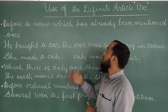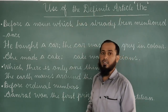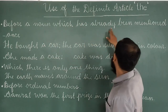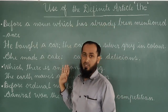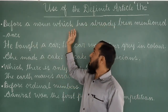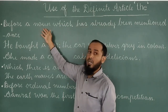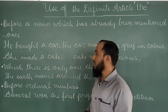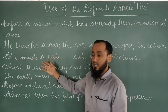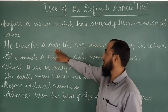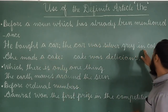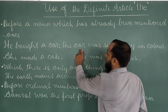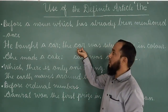Let's see the uses of the definite article 'the'. First, 'the' is used before a noun which has already been mentioned once. Have a look at the example: 'He bought a car. The car was silver gray in color.' Here we are using 'the' before the noun 'car'.